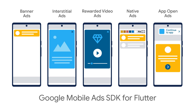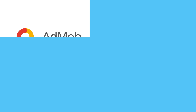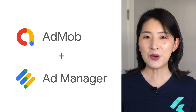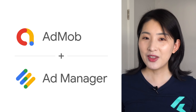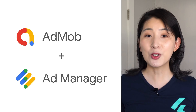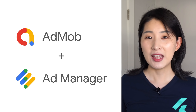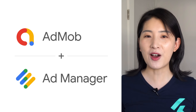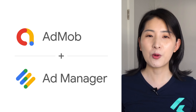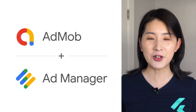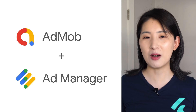App Open ads automatically show a small branding area so users still know they're in your app. In addition to all the ad formats supported, another highlight of the Google Mobile Ads SDK for Flutter is that we are unifying support for both Ad Manager and AdMob.